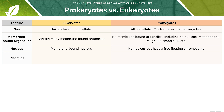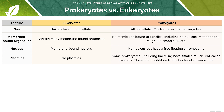Looking at plasmids: there are no plasmids in eukaryotes, however in prokaryotes some will have them in addition to a bacterial chromosome. Next up is the difference in ribosomes: in eukaryotes they will be free-floating in the cytoplasm, whilst in prokaryotes they will be the same but much smaller.